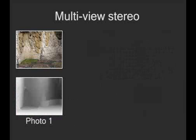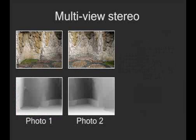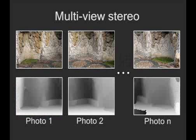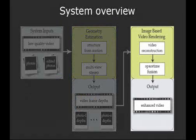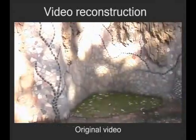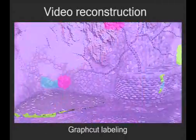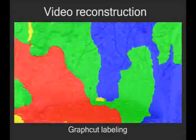Depths are also computed for each of the still photographs. In the next step of our system for rendering image-based video, we use the depths estimated in the previous phase to warp the photographs into the viewpoints of the video frames. The input video is reconstructed from patches of the warped photographs using a graph cut algorithm. Here we show the graph cut labeling with each photograph represented by a different color.